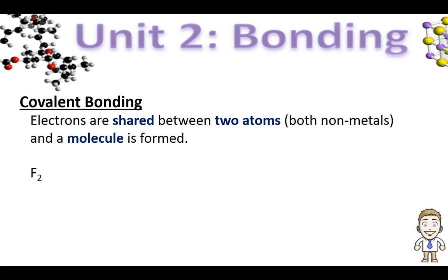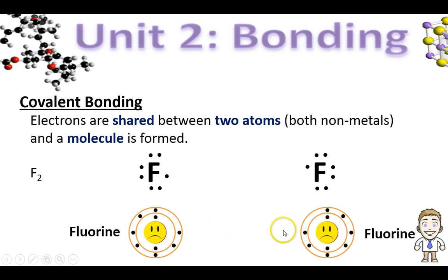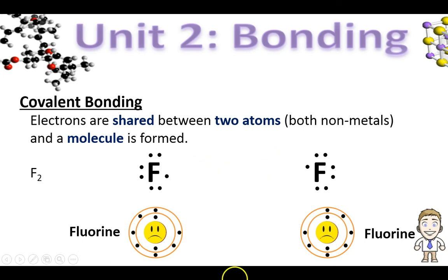To look at how this works, we're going to use F2 — the fluorine molecule — as an example. We're going to look at this process two ways: one way down here with a somewhat more realistic model of two fluorine atoms, and up top with simply the electron dot diagrams because that's a little bit easier to follow. Both processes are the same.